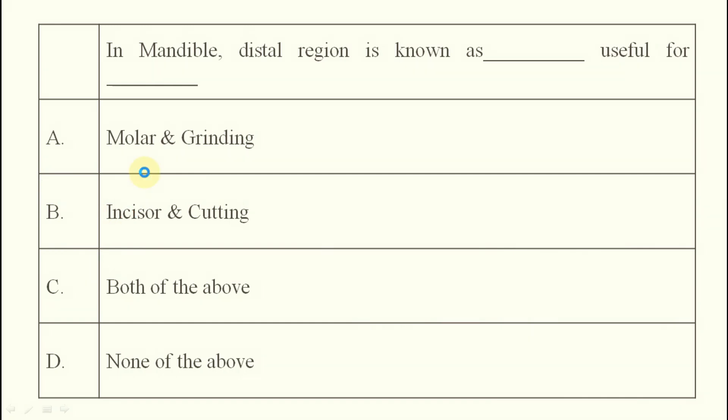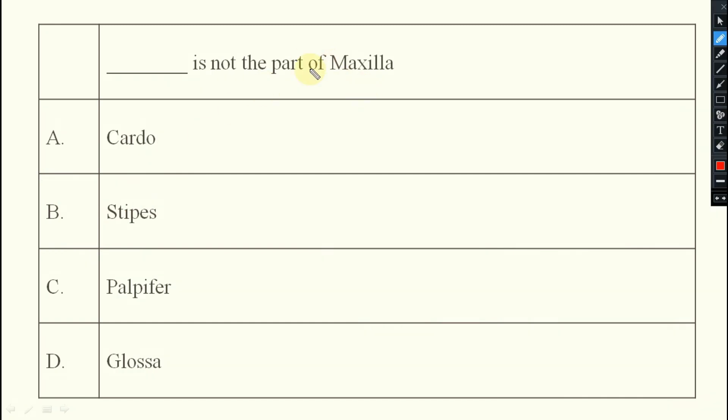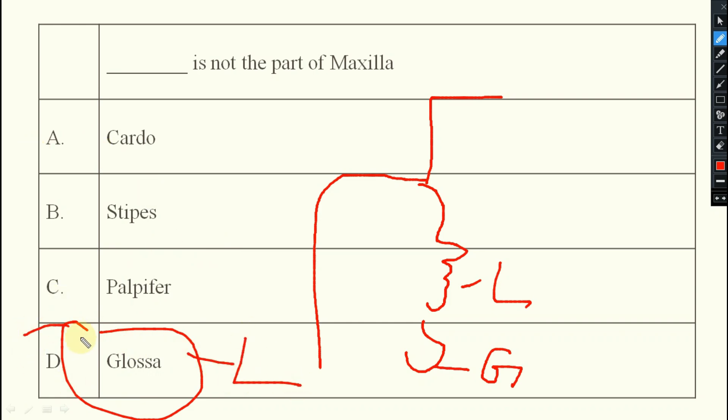This is not the part of maxilla. What are the parts of maxilla? First you try to remember. First is cardo, then stipes, and this side, palp will be there. This side, hairy like outgrowth will be there, known as lacinia. And here a lobe like structure will be there, galea. But glossa, this is a part of labium. So option D will be your right answer. Glossa is not the part of maxilla. Glossa is the part of labium.